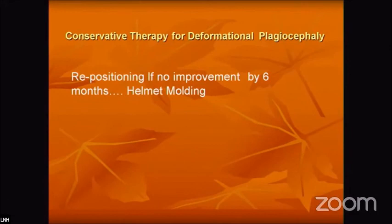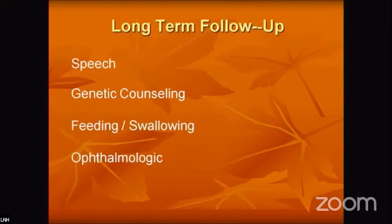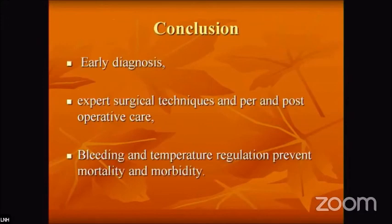Conservative therapy for deformational plagiocephaly involves repositioning. If there is no improvement by six months, helmet molding therapy is indicated. Long-term follow-up includes speech therapy, genetic counseling, feeding and swallowing problems, and ophthalmological follow-up.